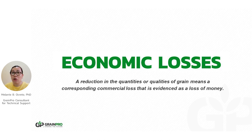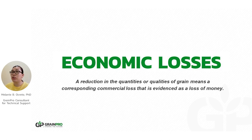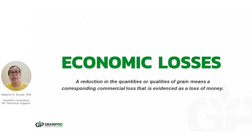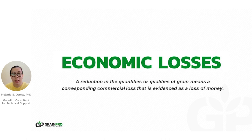Quantitative losses and qualitative losses actually always result in economic losses. Economic losses are a reduction in the quantities or qualities of grain, which means there is a corresponding commercial loss evidenced as a loss of money. If you are not able to demand a good price for the product because the quality is low, that is already considered a loss of money and an economic loss.